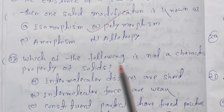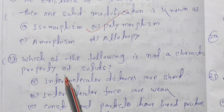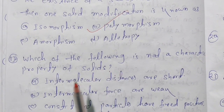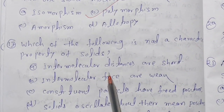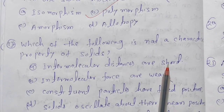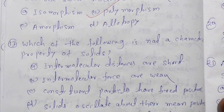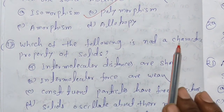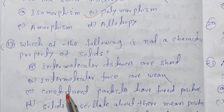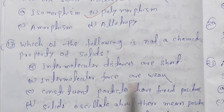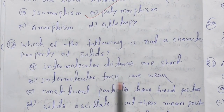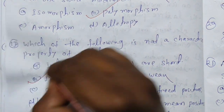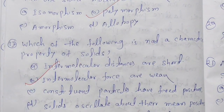Which of the following is not a characteristic property of solid? Intermolecular distance is short — that is true. Intermolecular force is weak — that is incorrect for solids, as intermolecular forces are strong. So we answer option B.